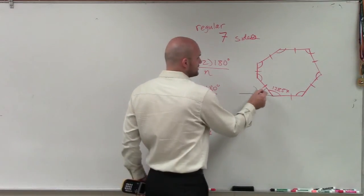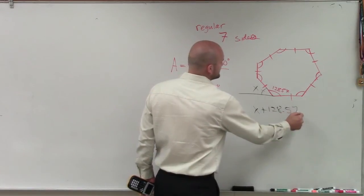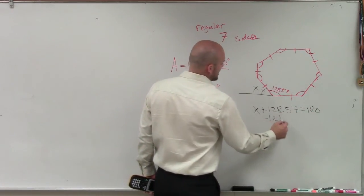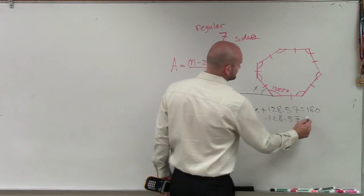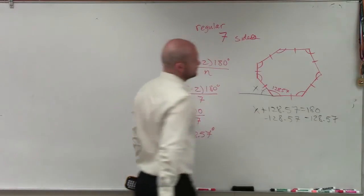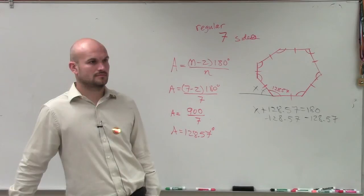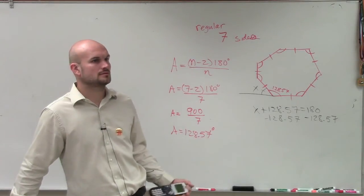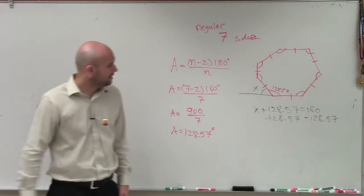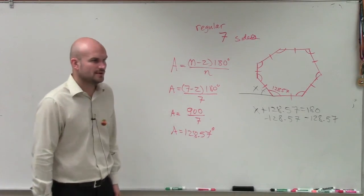So we don't know what this exterior angle is. Let's call it x. So we can say x plus 128.57 equals 180. Subtract 128.57, and we need to get to 180, so that will be 51.43 degrees.